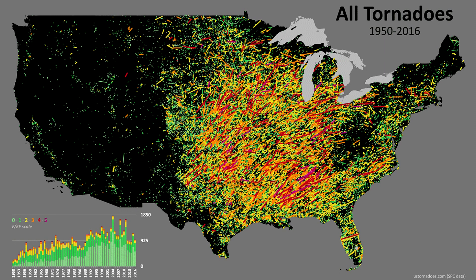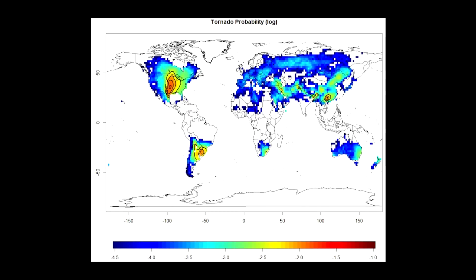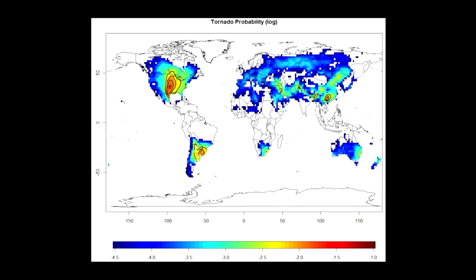Tornadoes are often more destructive in the south because people there tend not to have enclosed basements that might help protect them. Something else that may surprise you is that the United States is by far the number one spot in the world for tornadoes. Sure, you can get a tornado in Eastern Europe or Australia, but the vast majority of the tornadoes on earth — and the vast majority of the really big ones — occur right here in the U.S.